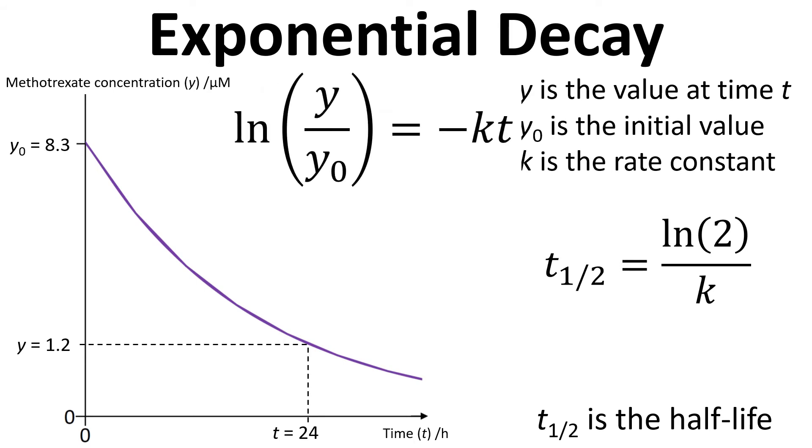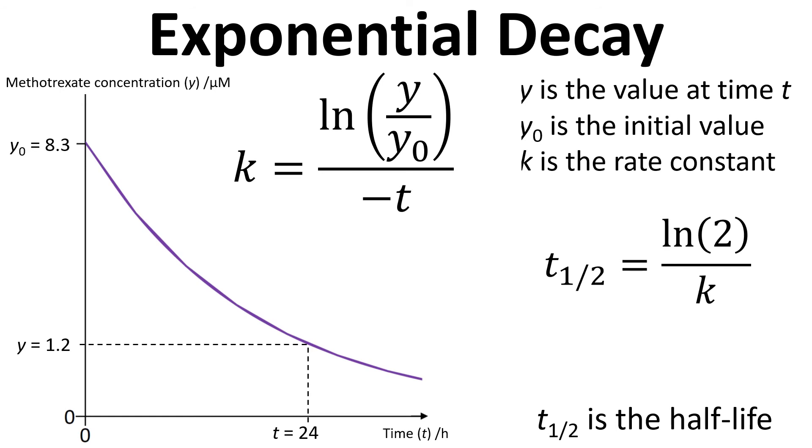Then we can take the natural log of both sides which gives us natural log of y divided by y zero equals minus kt. Finally if we divide both sides by minus t then we end up with k equals natural log of y divided by y zero divided by minus t.